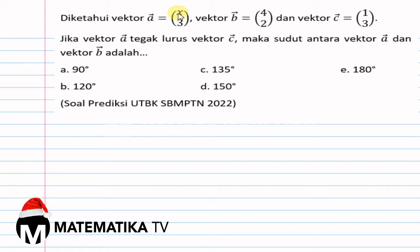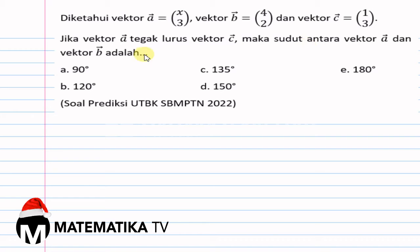Vektor A sama dengan X, 3. Vektor B sama dengan 4, 2. Dan Vektor C sama dengan 1, 3. Jika Vektor A tegak lurus Vektor C, maka sudut antara Vektor A dan Vektor B adalah?